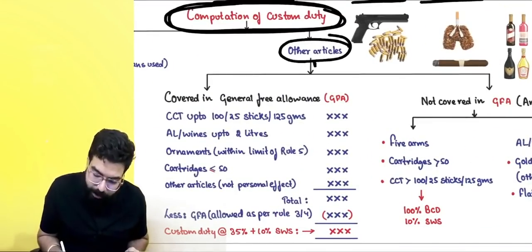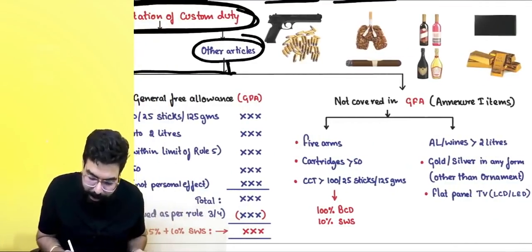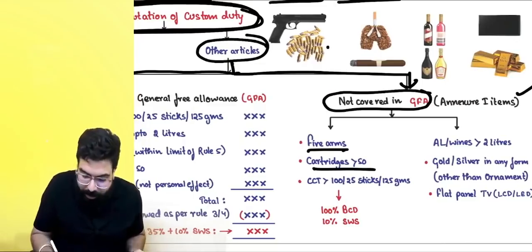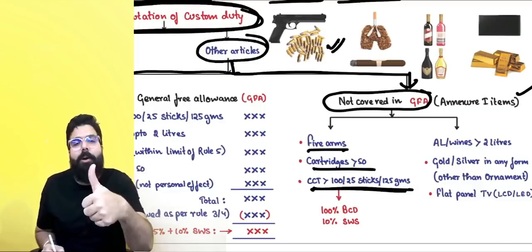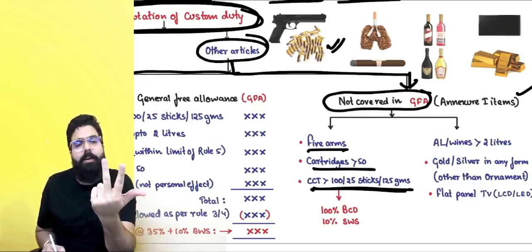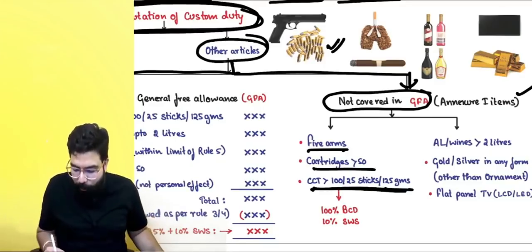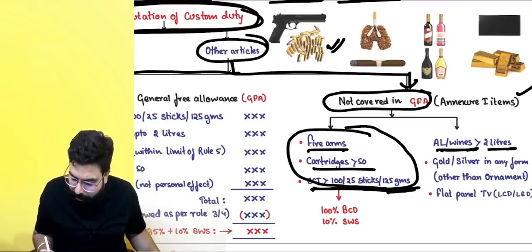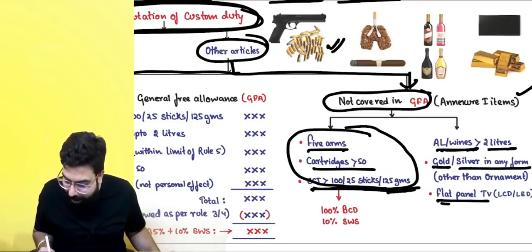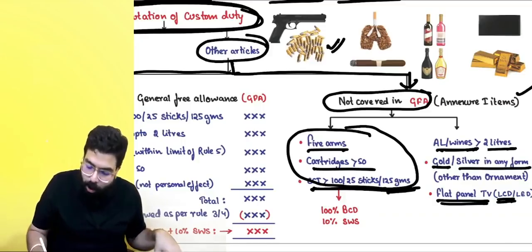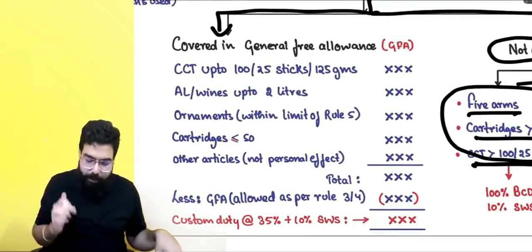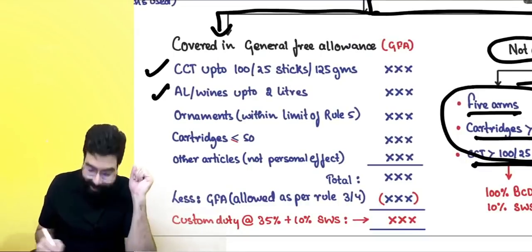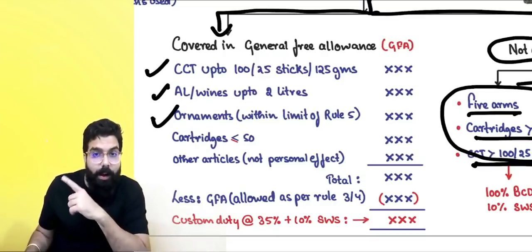After setting aside personal effects, travel souvenirs, and laptop, the officer examines other items. Some items fall within the general free allowance, but certain items are 'extra items' not covered by GFA: firearms, cartridges exceeding 50, cigarettes exceeding 100, cigars exceeding 25, tobacco exceeding 125 grams, alcoholic liquor exceeding 2 liters, gold or silver in any form other than ornaments, and flat panel TVs (LCD, LED, etc.).